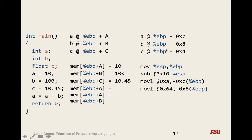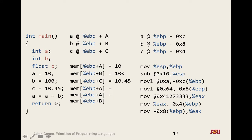Then we move hex A — the value 10 — into EBP minus 12, which is variable A. Then we move 100 (hex 64) into EBP minus 8, which is B. Then we move the floating point representation of 10.45 into EAX, and then move EAX into EBP minus 4, which is where C is located. Finally, we move B into EAX and then add EAX with EBP minus 12 — which is A — storing the result in A. So A should be A plus B, which is 110.